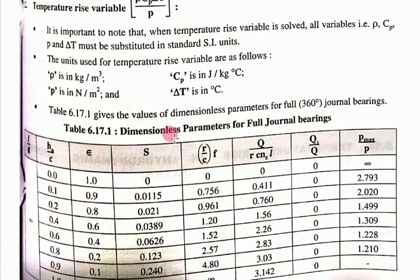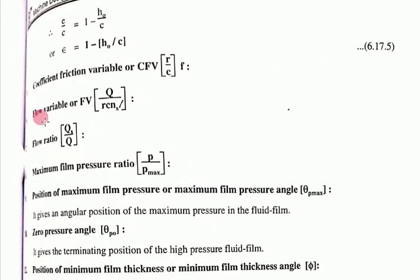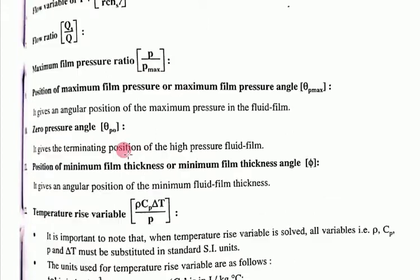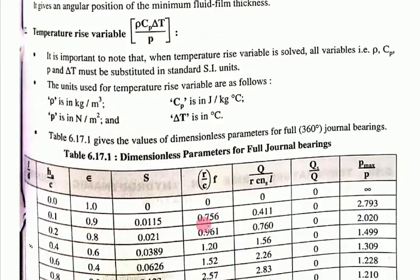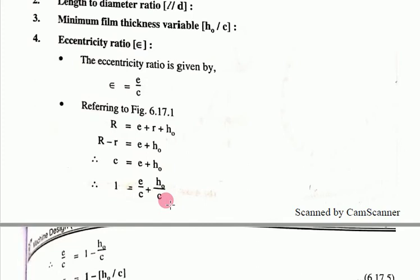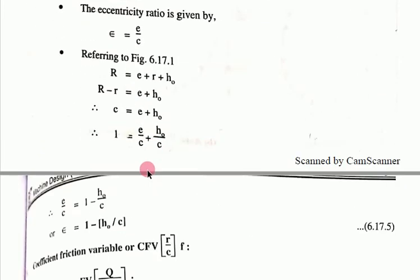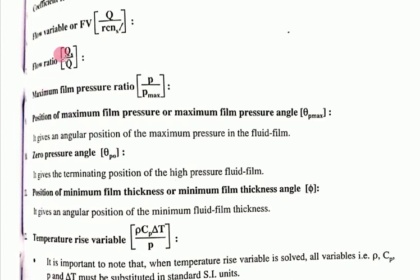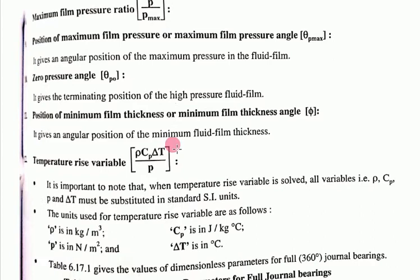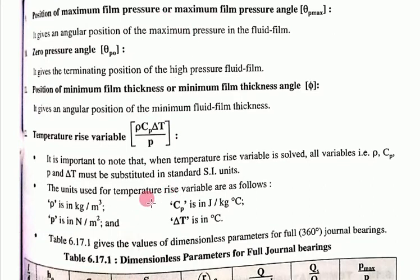Additional dimensionless parameters include: coefficient of friction variable (R/C)·f; flow variable Q/(R·C·Ns·L); side-leakage flow ratio Qs/Q; minimum film pressure ratio P/Pmax; temperature rise variable ρ·Cp·ΔT/P; and the zero-pressure angle theta_p0, which gives the termination position of the high-pressure fluid film.